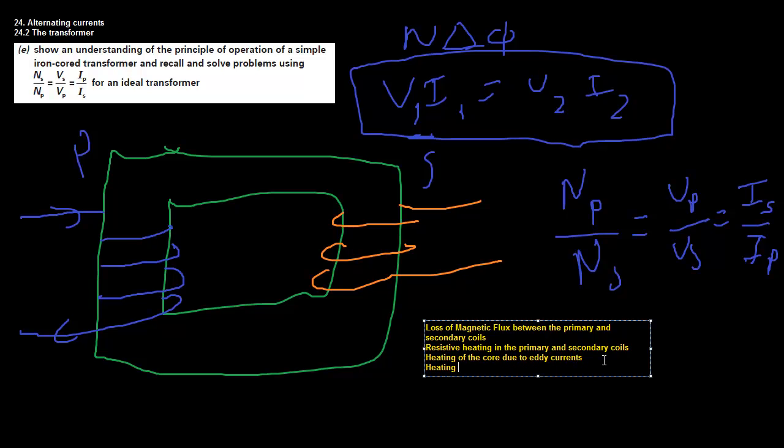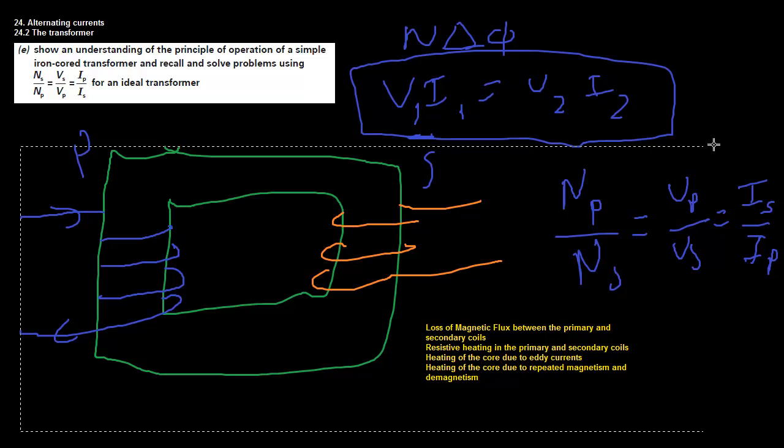And the heating of the core due to repeated magnetism and demagnetism. This is just one of the fundamental principles of nature. So that's how power is lost and that's why it will never actually be 100% efficient. But for the purposes of our questions, we always assume so.